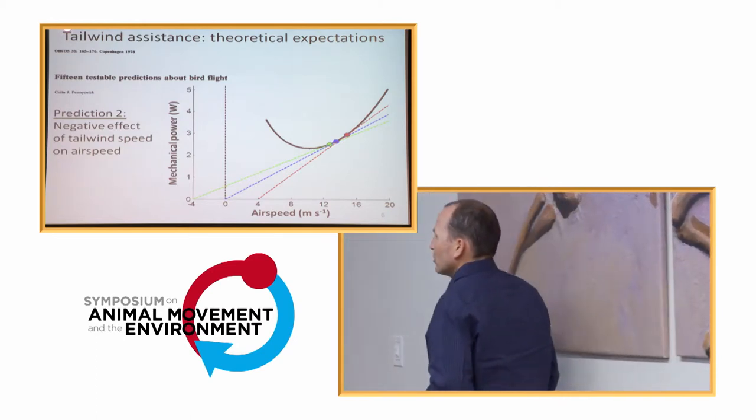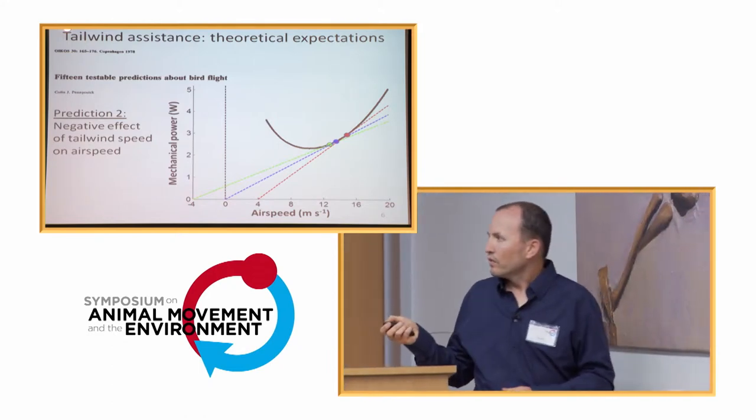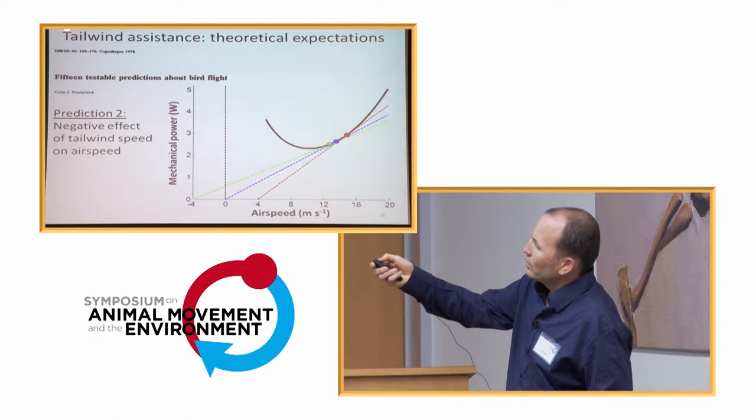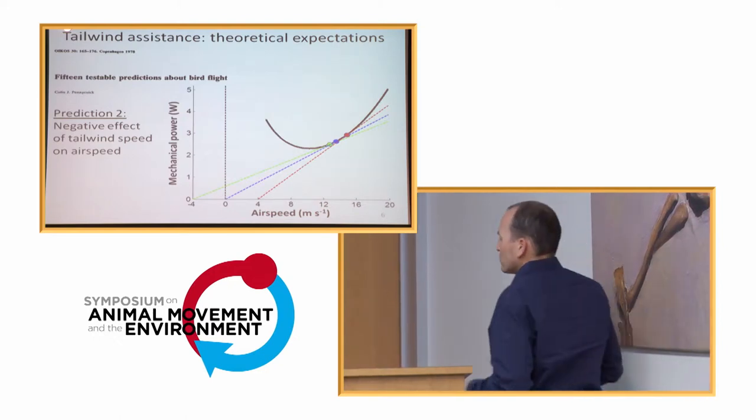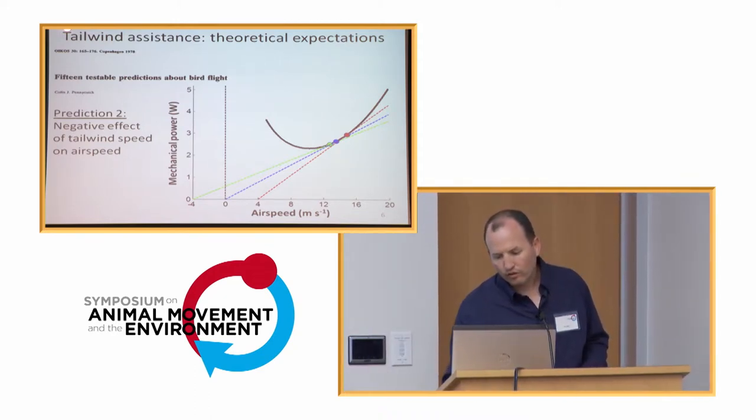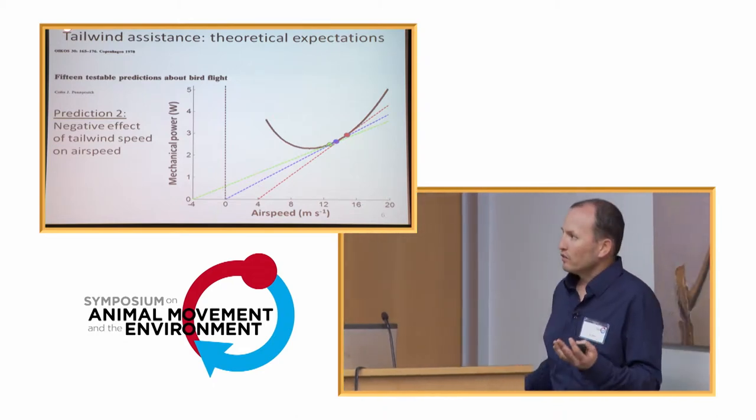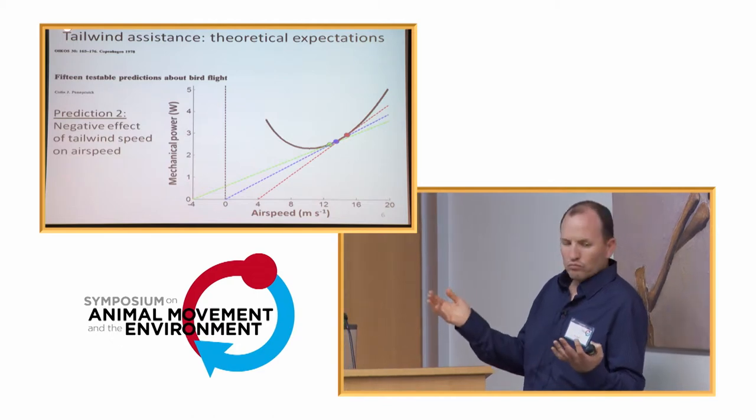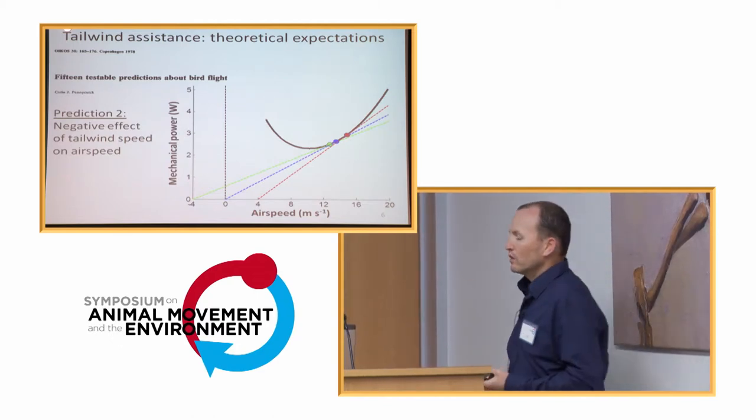So, this is the general idea. So, when there are headwinds, which are denoted here by the red line, we should expect a higher airspeed. So, the overall correlation that we expect to see is negative. So, tailwind, so a stronger tailwind means that the bat will decrease its own airspeed.